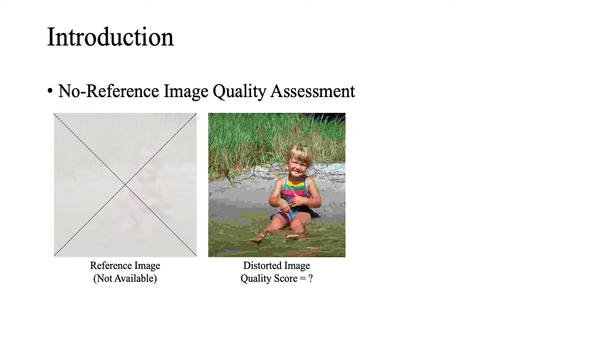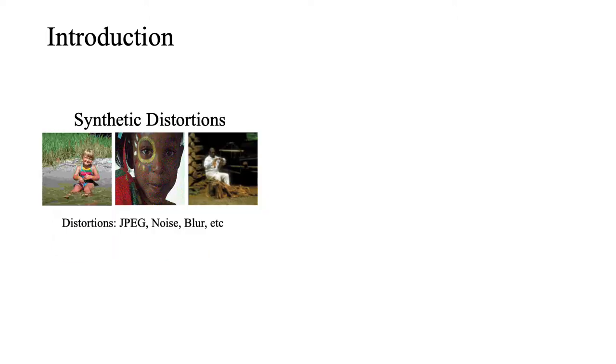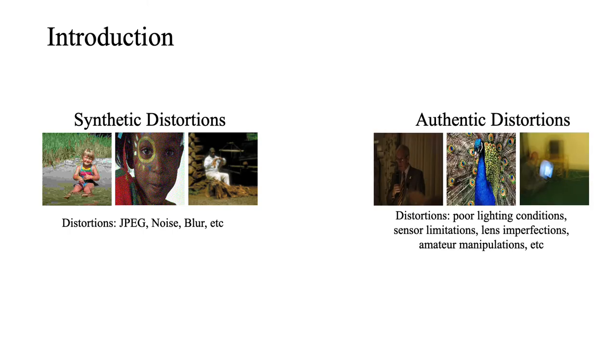However, the main challenge with NRIQA is due to the absence of the reference image. NRIQA methods can be applied on images that are distorted by synthetic distortions such as JPEG, Noise, Blur, where the degeneration process can be simulated in laboratory environments. They also can be applied on images with authentic distortions which have more complex distortions such as poor lighting conditions or sensor limitations, which often happen in real-world images and are more complicated.